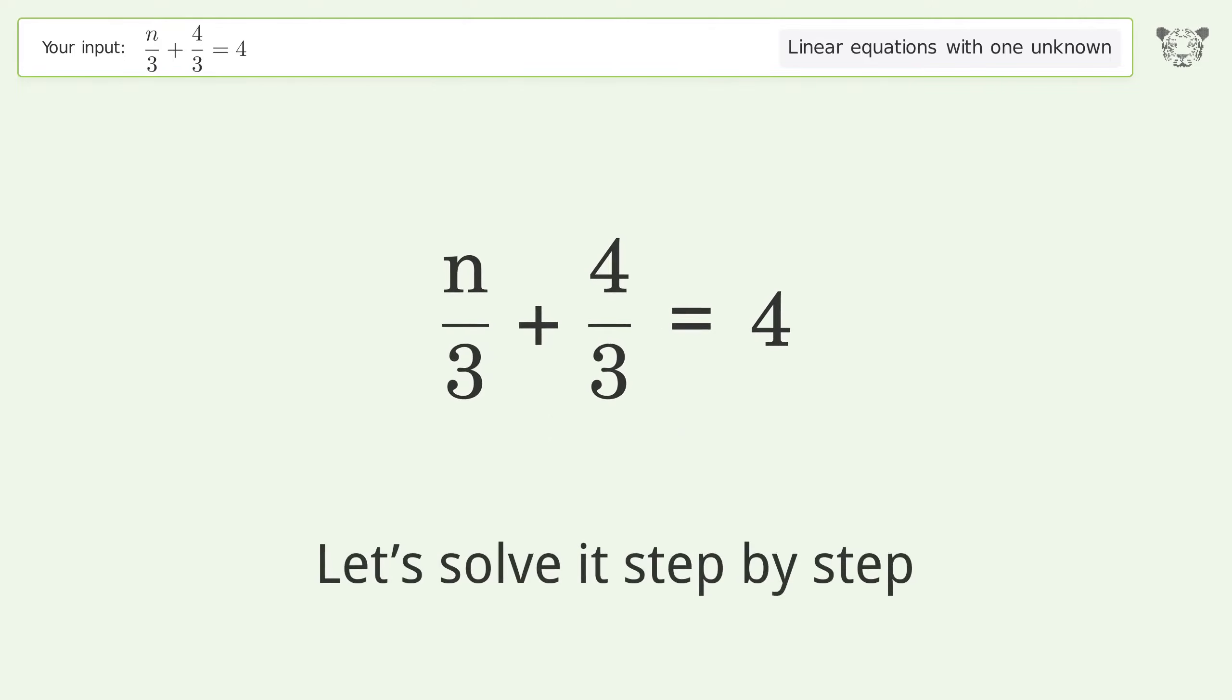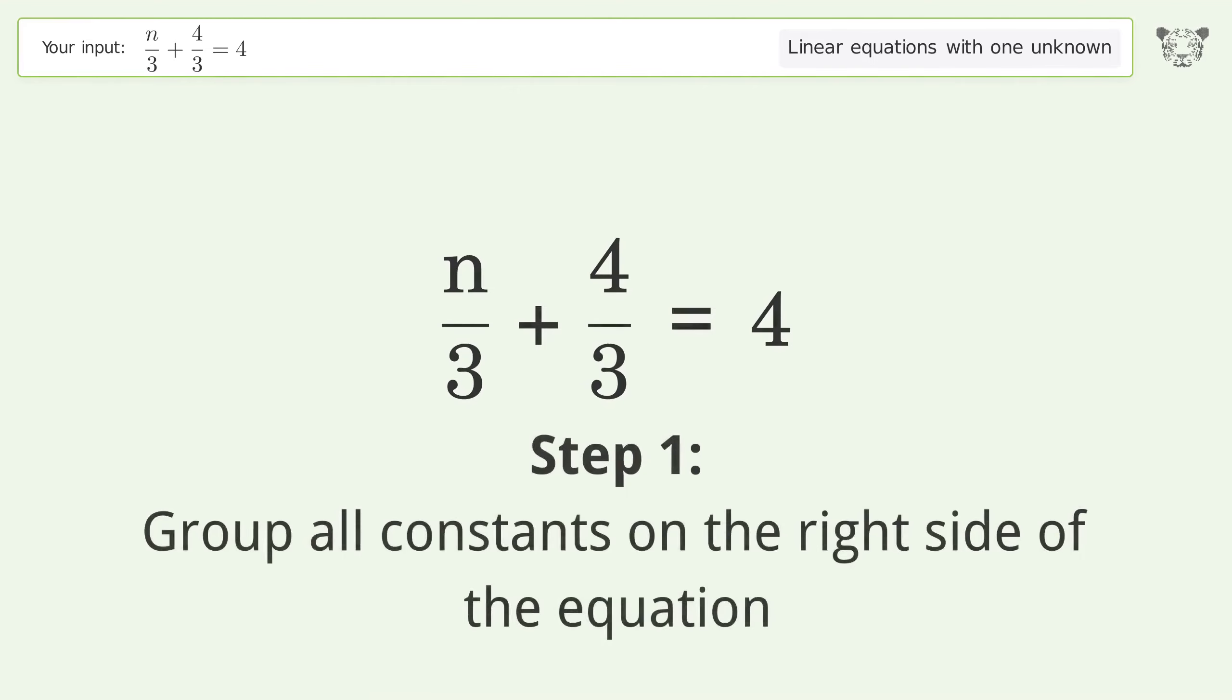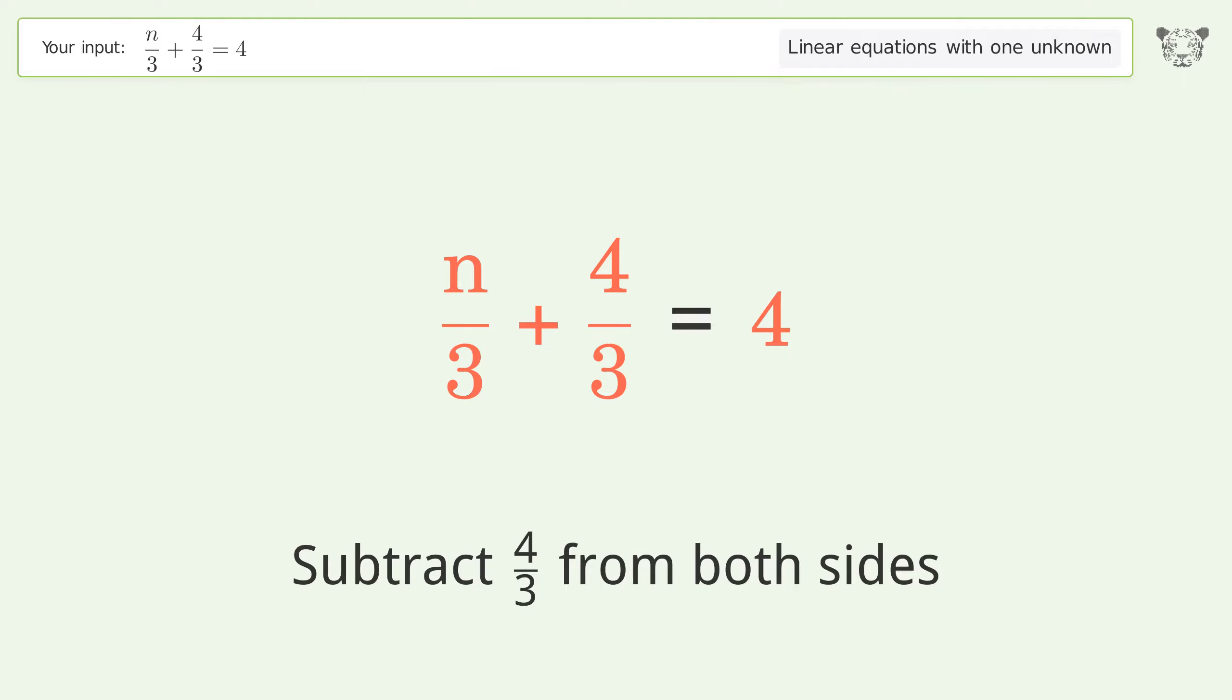Let's solve it step by step. Group all constants on the right side of the equation. Subtract 4/3 from both sides.